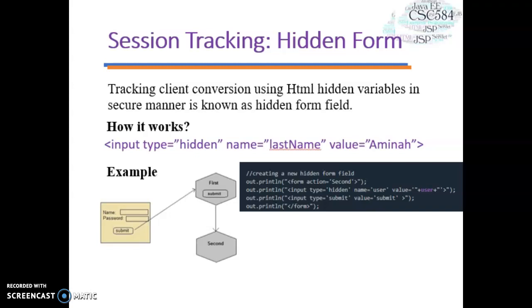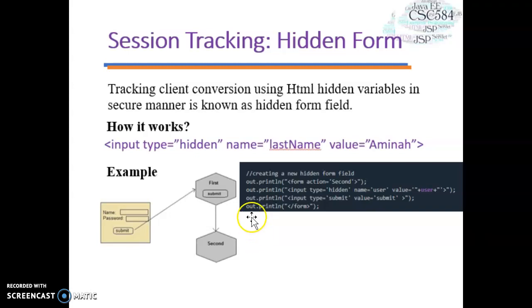Let's look at session tracking using hidden form fields. Session tracking via hidden form is tracking client conversation using HTML hidden variables in a secure manner. For example, a web server can send a hidden HTML form field along with a unique value — for example, the value here is 'Amina'. When this form is submitted, the specified name and value are automatically included in the GET or POST data. Each time the web browser sends a request back, the value can be used to keep track of different web pages, allowing you to pass values from one page to another.